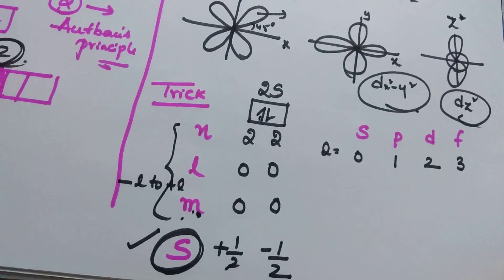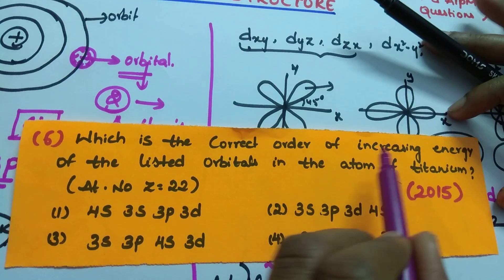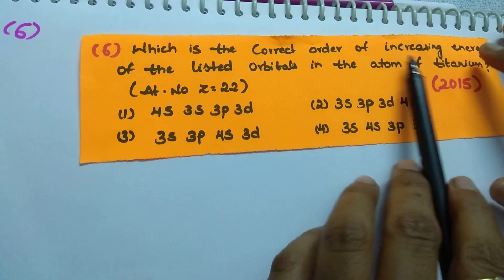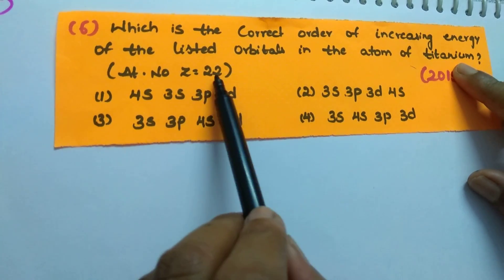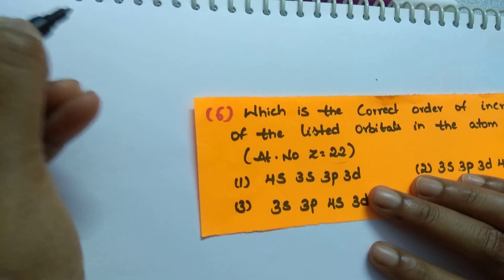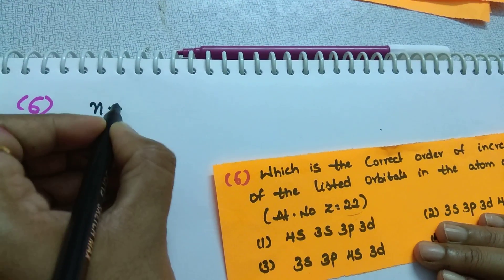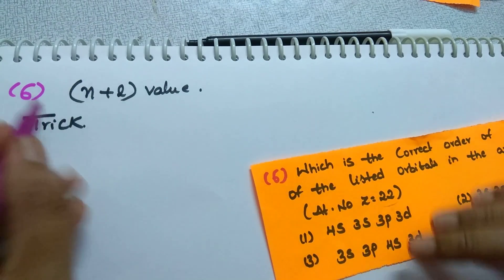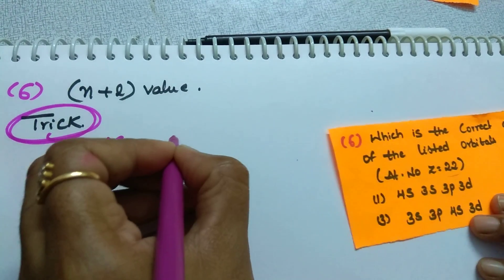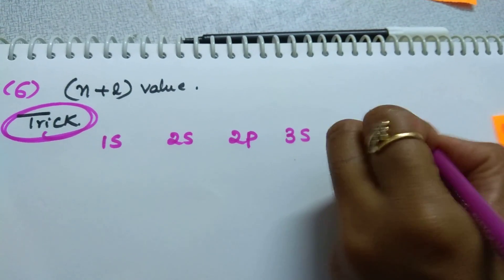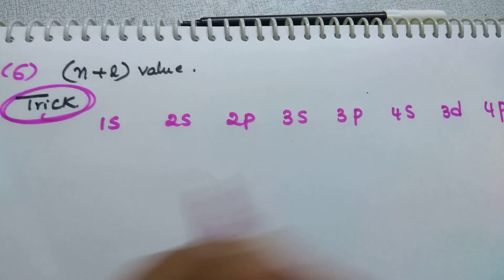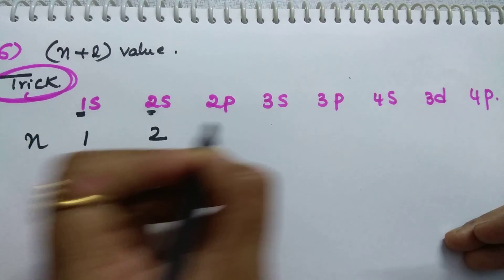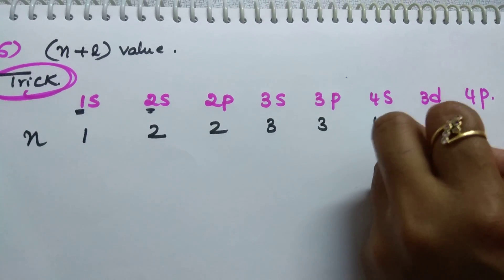2015 question: which is the correct order of increasing energy of the listed orbitals in titanium, whose atomic number is 22? The rule is: an electron is first filled into the orbital having the lowest n+l value. I will give you a small trick. Writing: 1s, 2s, 2p, 3s, 3p, 4s, 3d, 4p. The n values for these are 1, 2, 2, 3, 3, 4, 3, 4. The l values for s, p, d, f are 0, 1, 2, 3 respectively. Now add the n+l values.